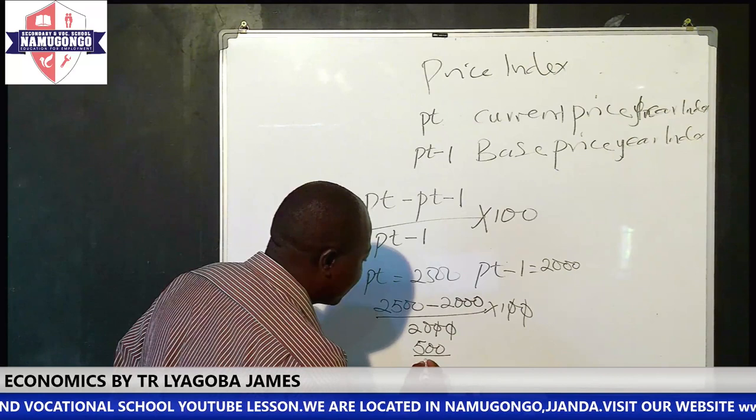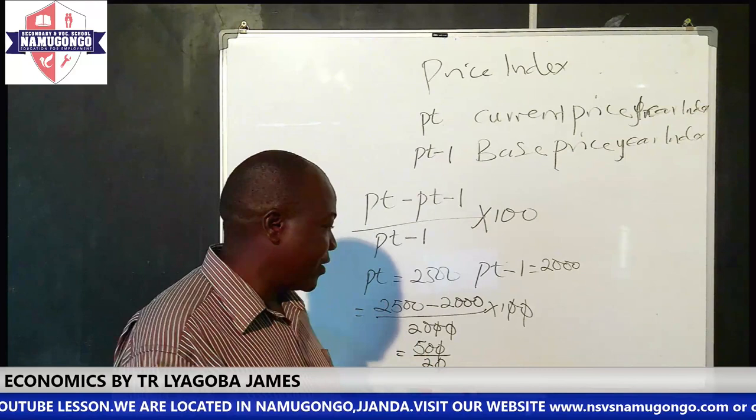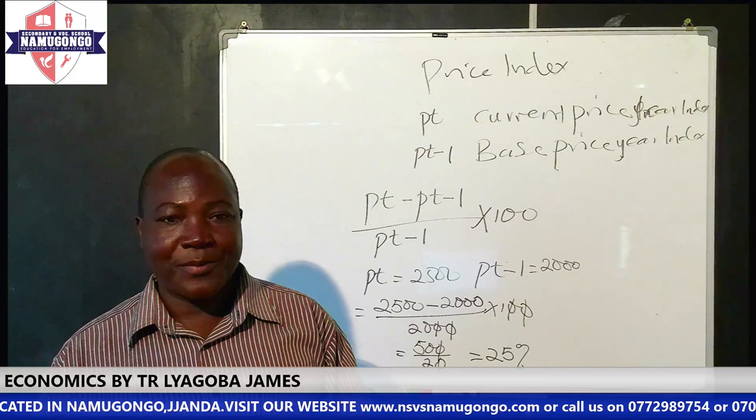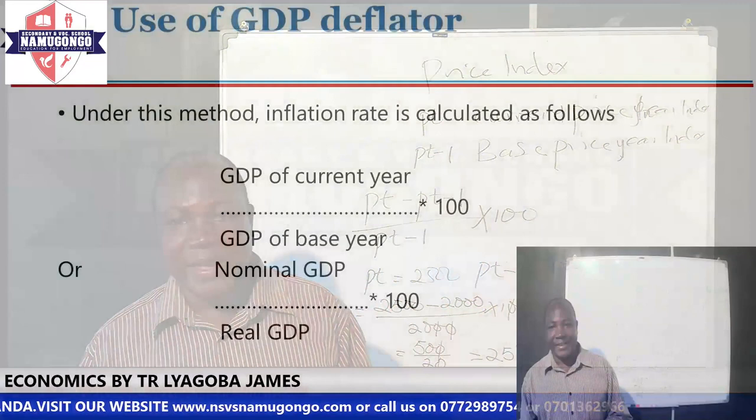We cancel and divide, giving us 25%. That will be the rate of inflation. That is Method 1. Method 2: we shall use the GDP method — GDP of the current year over GDP of the base year, times 100.